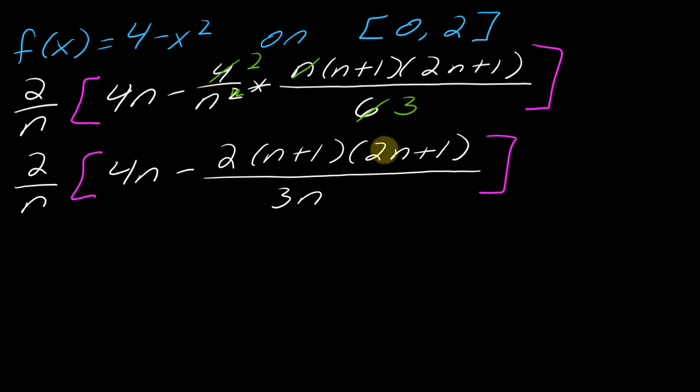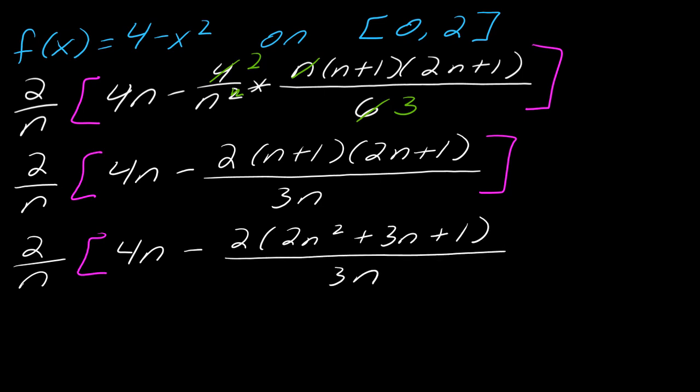Okay, so now what I want to do is I want to foil this out as far as I possibly can. So again, this 2 over n is just coming along for the ride. I'm still working on all this junk in the pink bracket. So if I foil this out, this becomes 2n squared plus 3n plus 1. All of this is still over the 3n. And now I can go ahead and multiply by that 2. So I'm almost done working out this stuff in the pink bracket. So I still got this 4n. And then this will be minus 4n squared plus 6n plus 2 all of this over 3n.